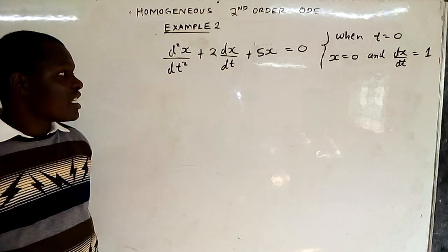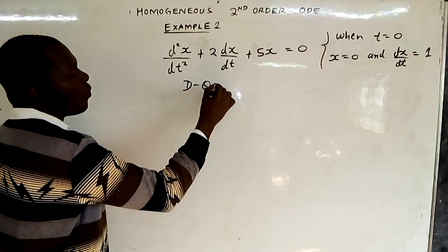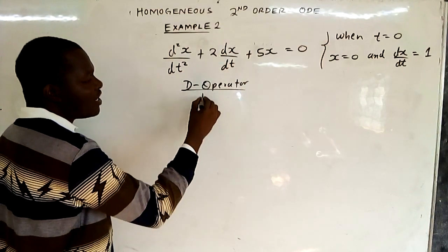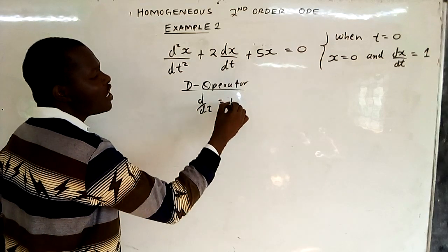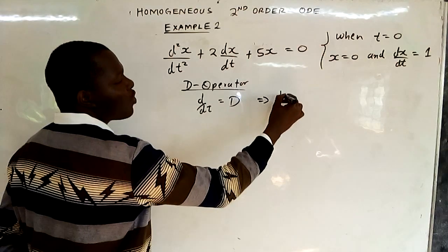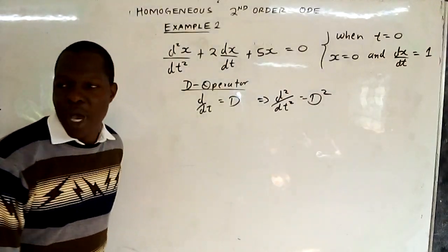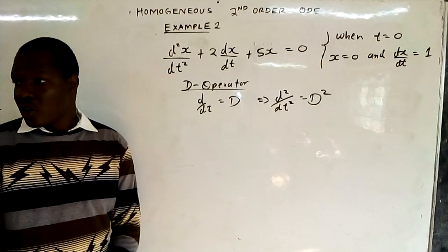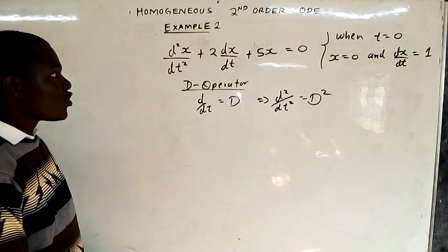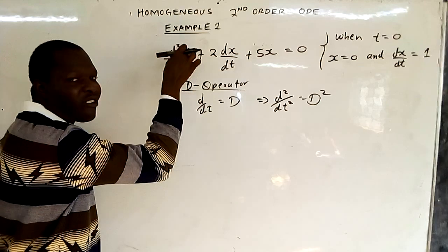To use the method of undetermined coefficients, we use the D operator. Where there is a derivative, we let d/dt equal to D. So d/dt is D, and d²/dt² is D squared. We now do the substitution in our equation. So d²x/dt² becomes D squared of x.